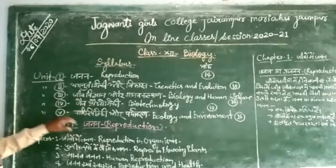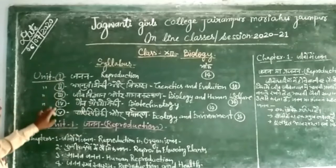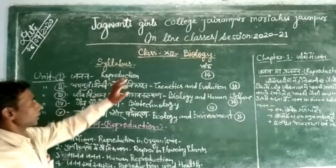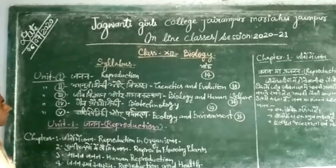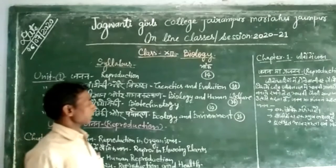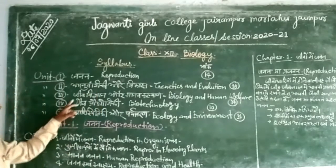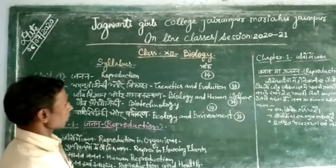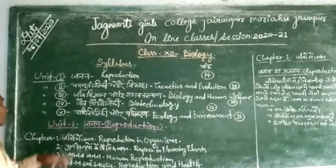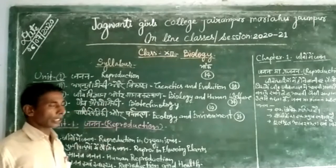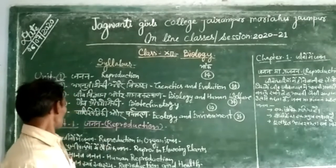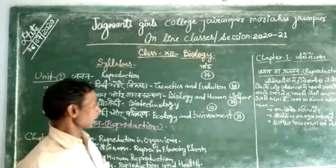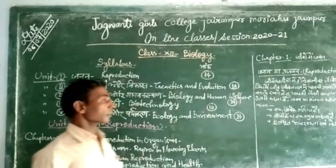The 5 units are combined, Unit 1 to Unit 5. The first unit is general reproduction. The second unit is genetics and evolution. The third unit is biology and human welfare.